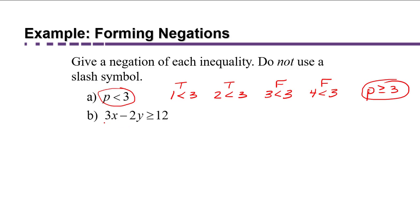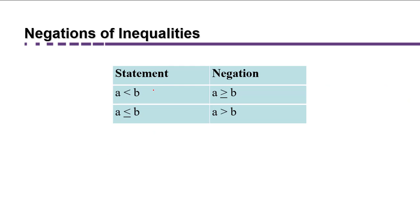Similarly, for part B with a 'greater than or equal to' — the only scenarios making it false involve values strictly less than the bound. So the negation of 'a ≥ b' is 'a < b' (without the 'or equal to'). To summarize: the negation of a < b is a ≥ b; the negation of a ≤ b is a > b, and vice versa.